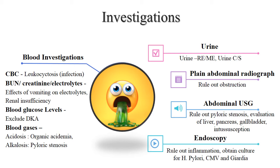Investigations should be prescribed, especially blood investigations. Leukocytosis in case of infection. Blood urea nitrogen, creatinine and electrolytes to assess effect of vomiting on electrolytes and renal insufficiency. Blood glucose level to exclude diabetic ketoacidosis. Blood gases for acidosis and alkalosis. Urine routine and microscopic examination, urine culture and sensitivity. Plain abdominal radiograph to rule out obstruction. Abdominal USG to rule out pyloric stenosis and evaluate liver, pancreas, gallbladder and intussusception. Endoscopy to rule out inflammation and obtain culture for H. pylori, cytomegalovirus and Giardia.